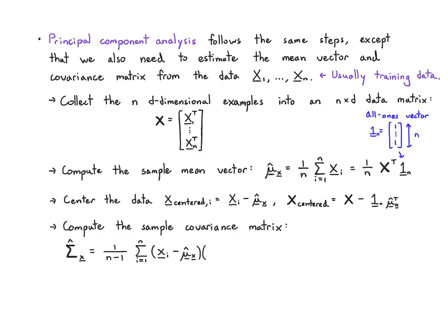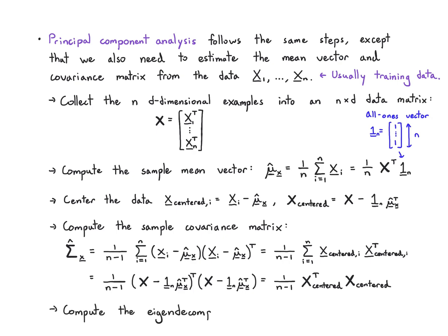We can compute the sample covariance matrix by taking one over n minus one times the sum of the outer product of x minus its sample mean vector. We can think about this as happening on the data matrix and directly on the centered data matrix. We can compute its eigendecomposition and it has the same properties that we saw before: real and non-negative eigenvalues, orthonormal eigenvector matrix.